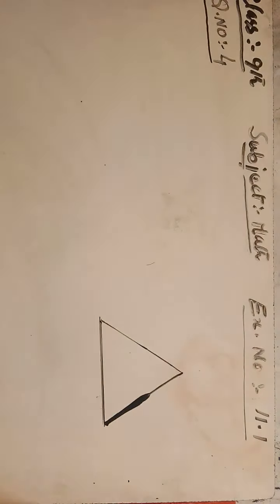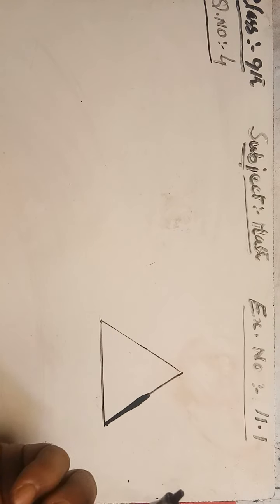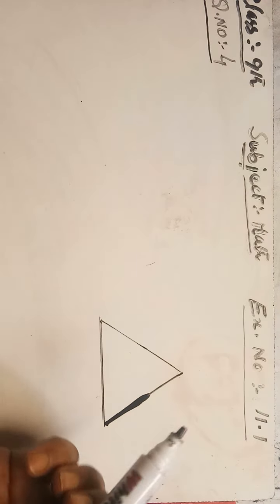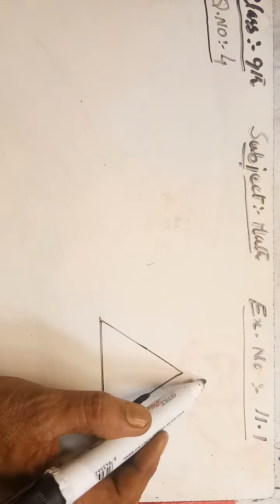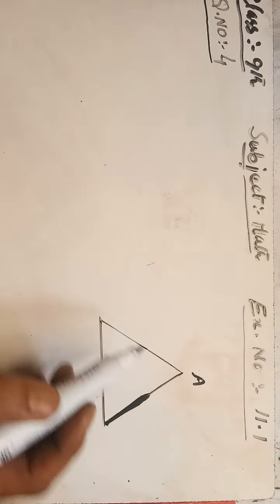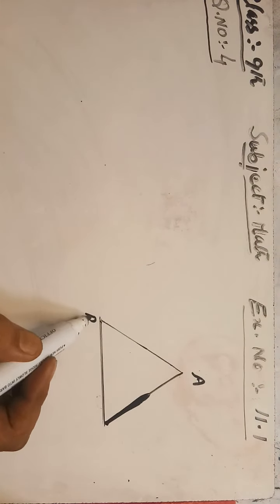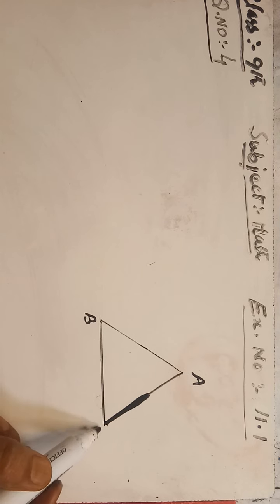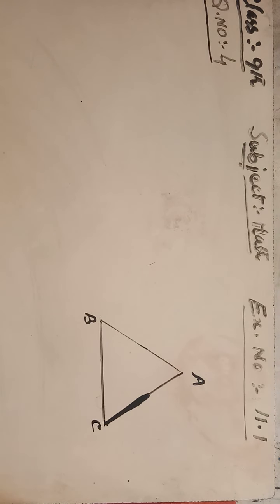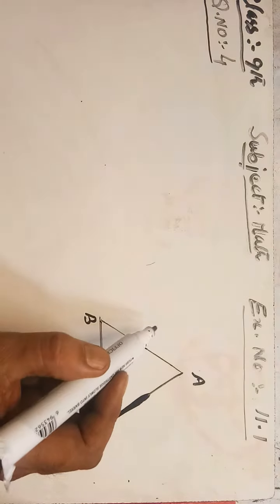The triangle is labeled A B C. One side is 10 centimeters.